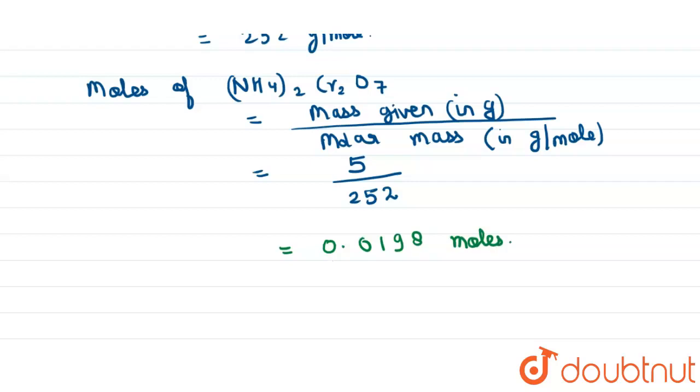Okay, now according to the stoichiometry, we have already seen that one mole of ammonium dichromate will produce one mole of nitrogen gas. So...